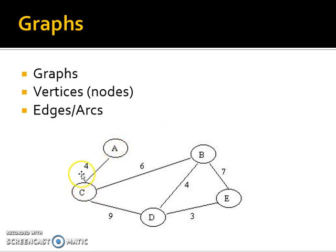Imagine if these were cities, that 4 could represent the miles between them. If these were train stations, it could be the minutes it takes to get from one station to another. So we've got vertices and we've got edges.